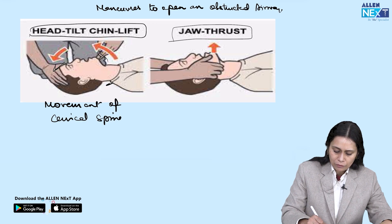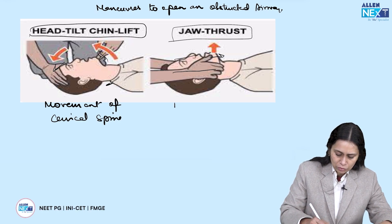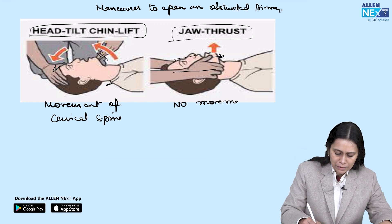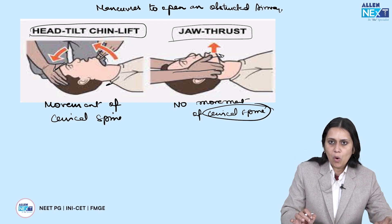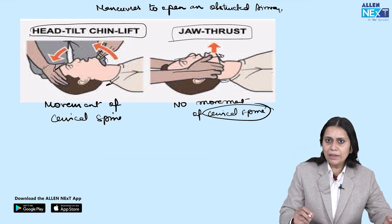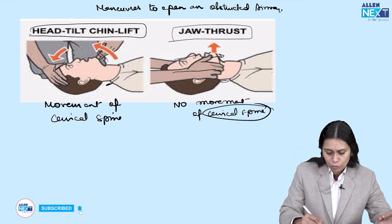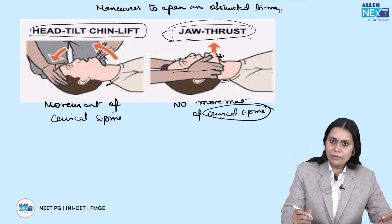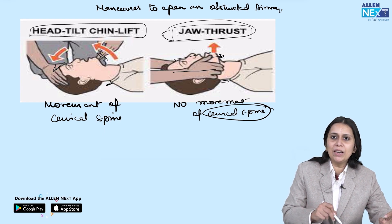In jaw thrust, we stabilize the head and neck with both palms and just protrude the mandible upward or forward, so there is no movement of the cervical spine. In suspected cervical spine injury, we don't want the head and neck to move — we want a stable head and neck position. So when we want this, we go for jaw thrust. In trauma victims we always go for jaw thrust, and in non-trauma we go for head tilt chin lift, because it is a better manoeuvre to open the airway.